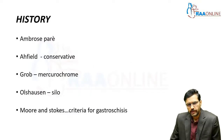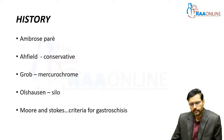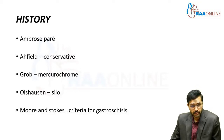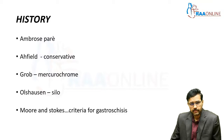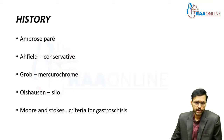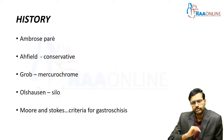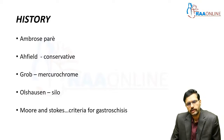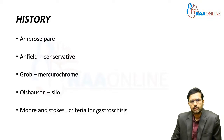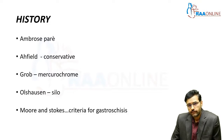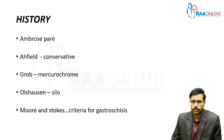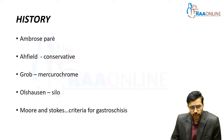Before we go on to the topic in depth, let us have a brief view regarding the history behind the abdominal wall defects. Ambrose Parry was the one who first coined the term exomphalos to denote a herniation of abdominal organs, particularly small bowel, through a defect in the umbilicus which was covered by a thin membrane. Affield proposed a conservative line of management of exomphalos, and Grobe introduced the concept of using mercurochrome in the conservative management of exomphalos.